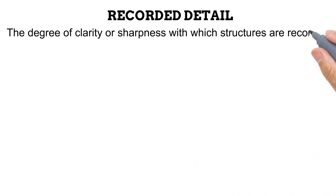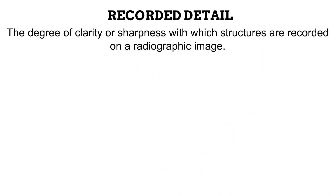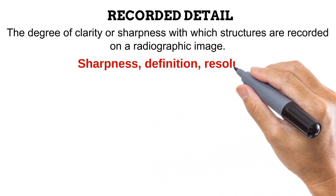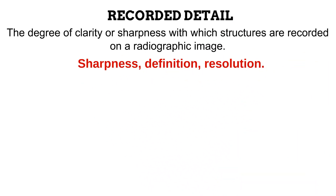Recorded detail is basically the degree of clarity or sharpness with which structures are recorded on a radiographic image. In your textbooks, you'll find other terms synonymous to recorded detail, including sharpness, definition, and resolution. However, we must note that resolution is not an exact synonym — rather, resolution helps to quantify the amount of recorded detail on an image.